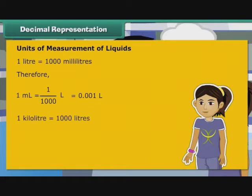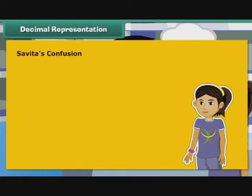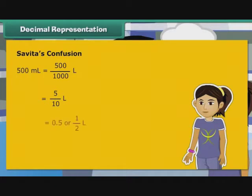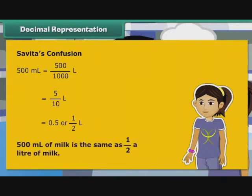1 kilolitre is equal to 1000 litres. Therefore, 1 litre is equal to 1 by 1000 kilolitre, that is equal to 0.001 kilolitre. Now, we revisit Savita's confusion. 500ml is equal to 500 by 1000 litre, that is equal to 5 by 10 litre, that is equal to 0.5 or 1 by 2 litre. So, 500ml of milk is the same as half a litre of milk. Savita is now relieved.